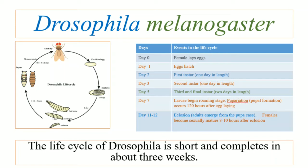The life cycle of Drosophila melanogaster is short, which is why it is used as a research specimen. It takes about three weeks to complete its life cycle. First, the female lays eggs, and the egg hatches after a day, and a first instar emerges from the egg.